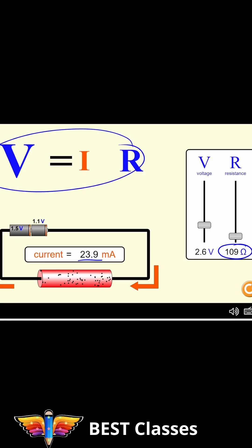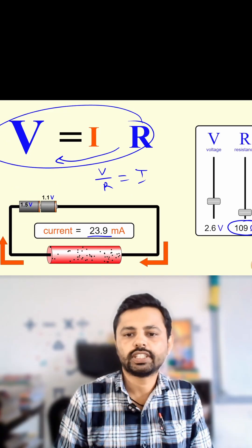From here we can derive another formula by replacing R. We get V divided by R equals I. You will get the current.